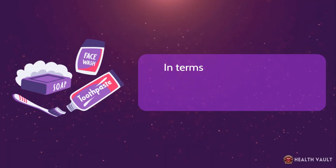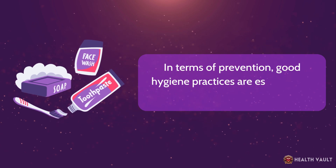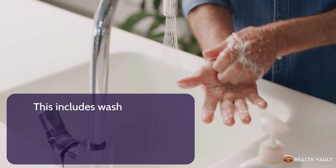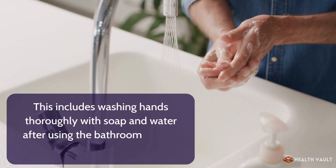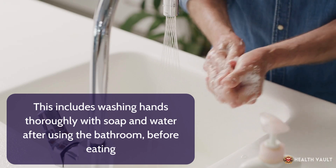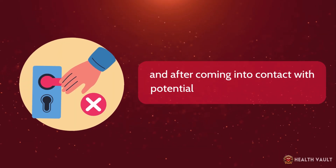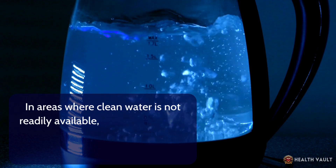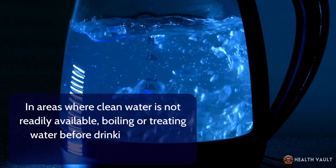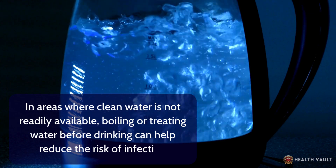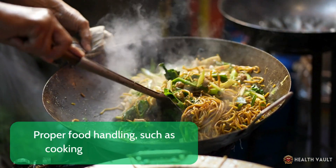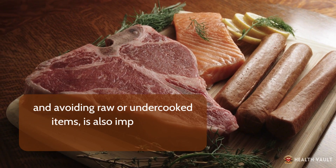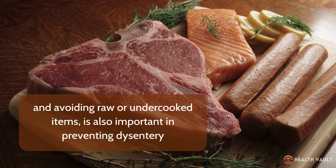In terms of prevention, good hygiene practices are essential for reducing the risk of dysentery. This includes washing hands thoroughly with soap and water after using the bathroom, before eating, and after coming into contact with potentially contaminated surfaces. In areas where clean water is not readily available, boiling or treating water before drinking can help reduce the risk of infection. Proper food handling, such as cooking food thoroughly and avoiding raw or undercooked items, is also important in preventing dysentery.